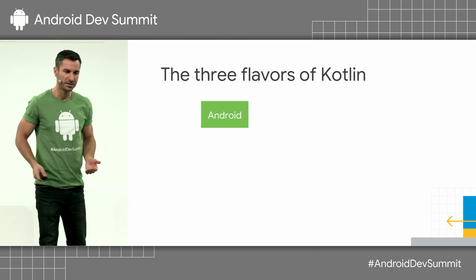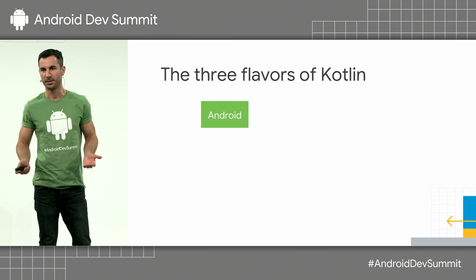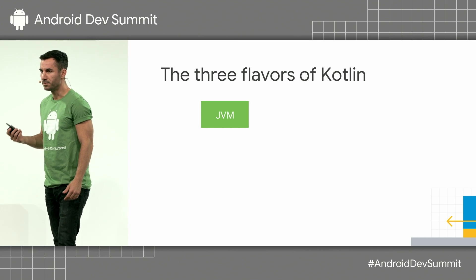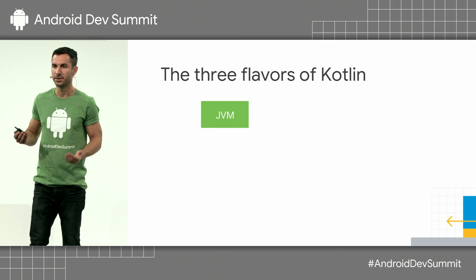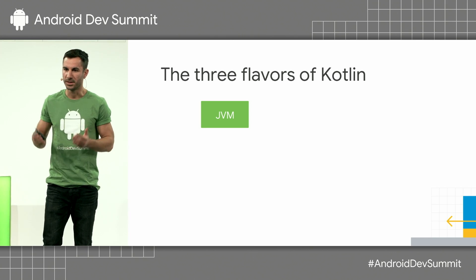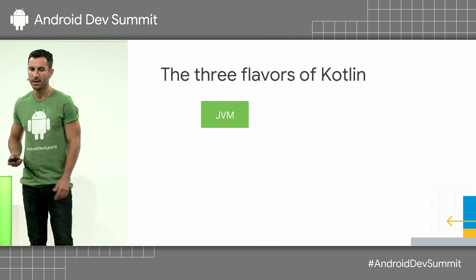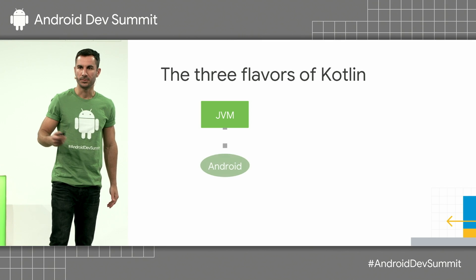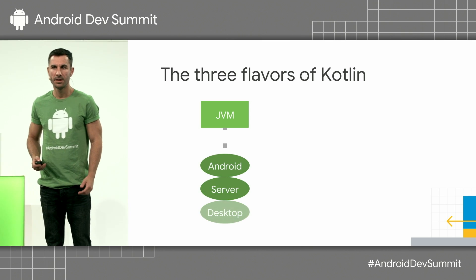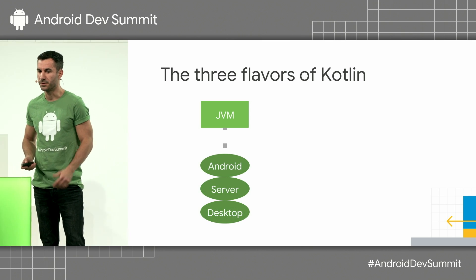So when we come to these conferences and talk about Android, talk about running Kotlin on Android for making Android apps, what we really mean is Kotlin JVM. That's the Kotlin that we know, that gets compiled to Java byte code, and then we can transform it into dex files and run it on Android. But it can also run on cloud servers, on our desktops, and so on.